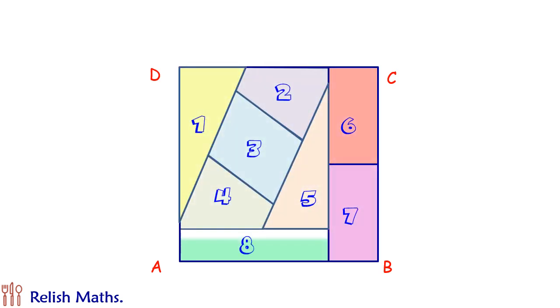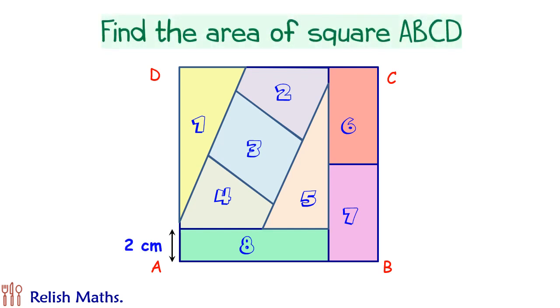Each part is equal in area. The lowermost rectangle, its width is given as 2 cm. Question is: what is the area of the square? I repeat, all 8 parts are equal in area.